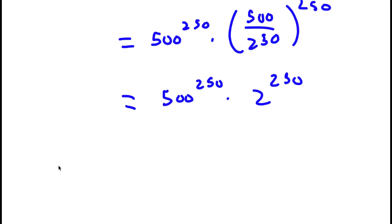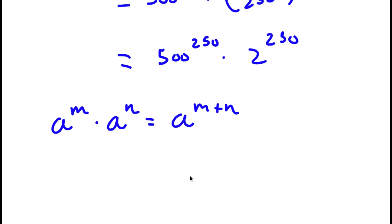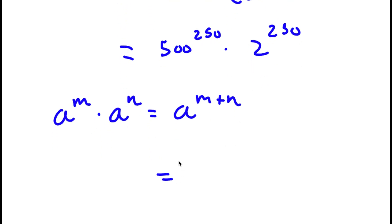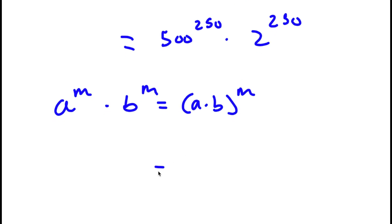If I have something in the form A to the power of M times B to the power of M, this is simply equal to A times B to the power of M. So 500 to the power of 250 times 2 to the power of 250 is equal to 500 times 2 to the power of 250.